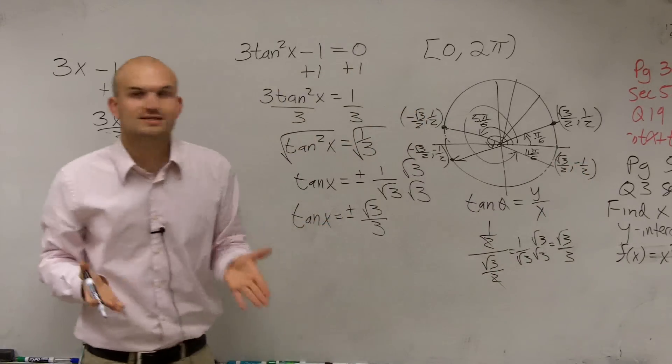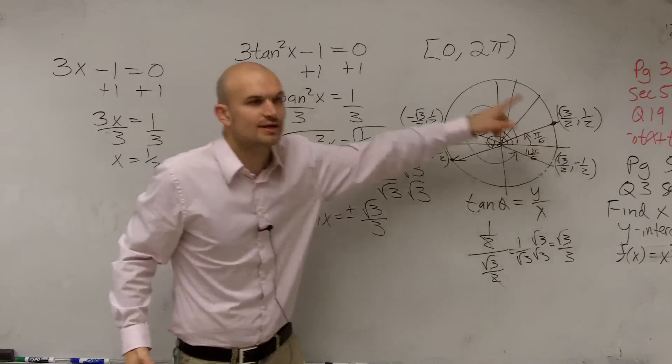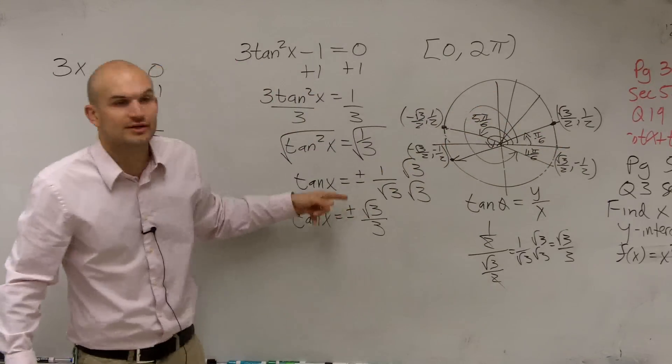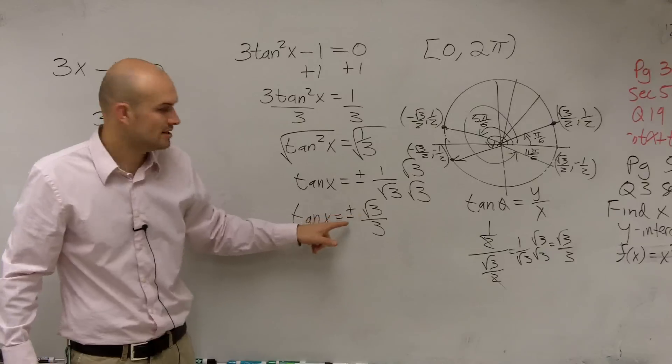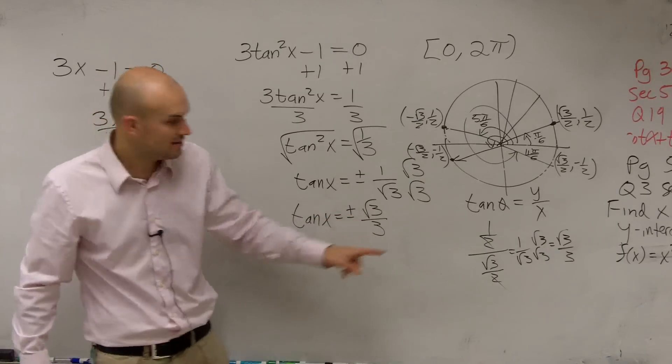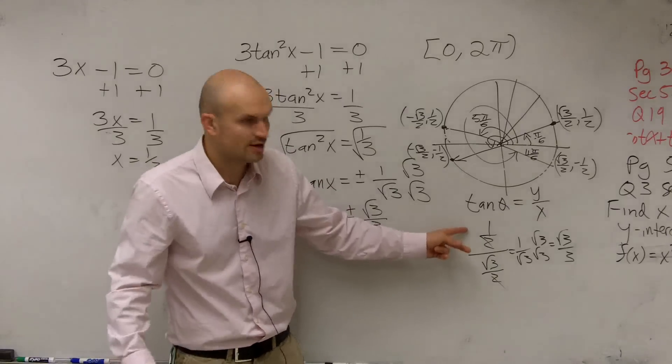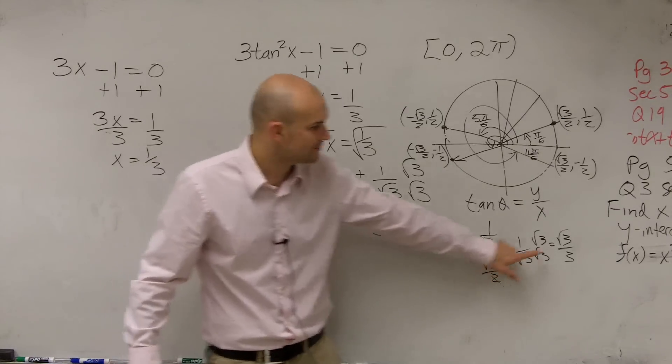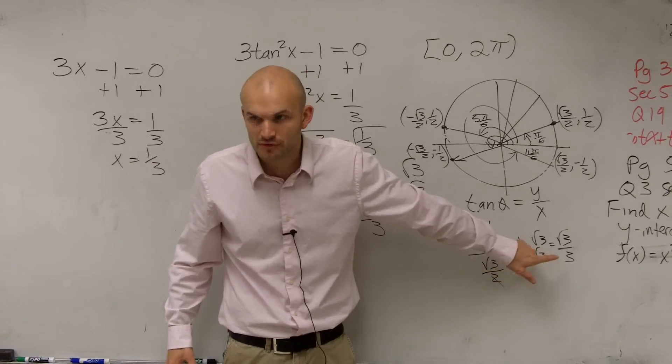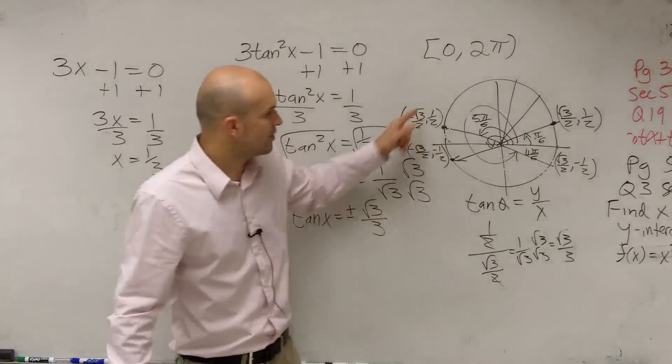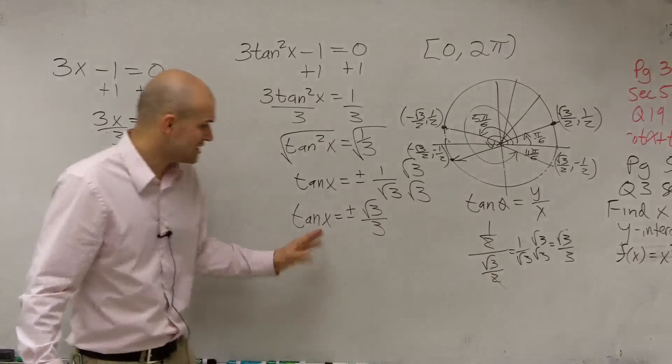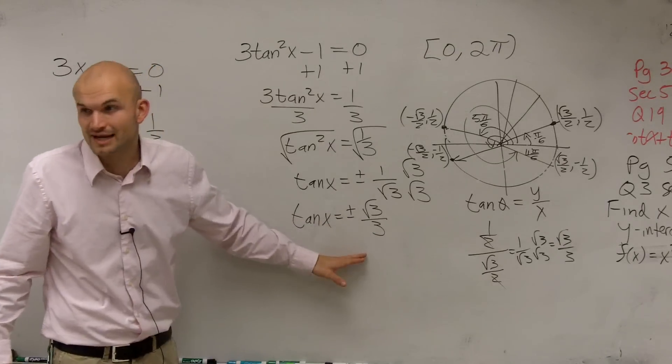So do you guys see how all these solutions, if I take my y coordinate over my x coordinate, I'm either going to get a plus or a minus square root of 3 over 3, right? Because whenever you take 1 half over square root of 3 over 2, it doesn't matter if it's plus or minus. Whenever you take 1 half divided by square root of 3 over 2, you're going to get a reduced value of square root of 3 over 3. So all of these points work.